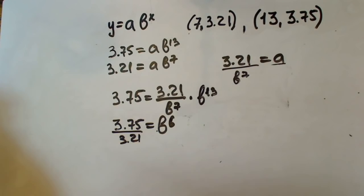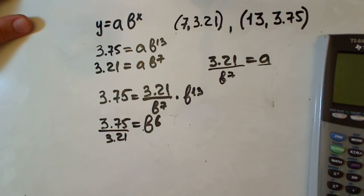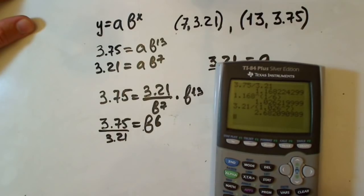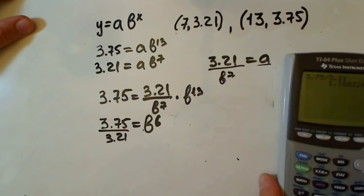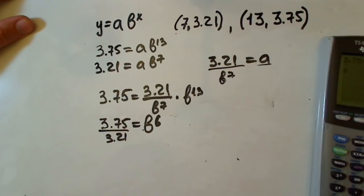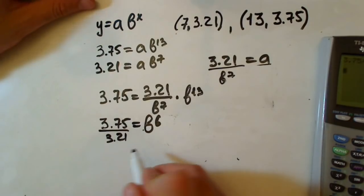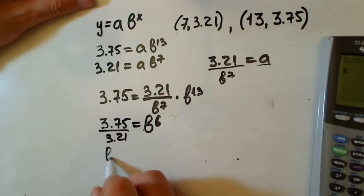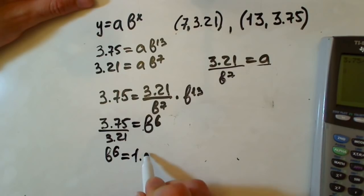Let's use our calculator and find this value. We have 3.75 over 3.21. It's actually not a round number. We have b to the sixth equals 1.168, taking three decimal places.